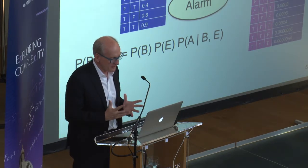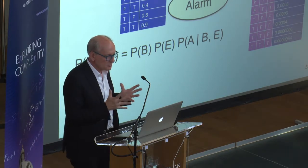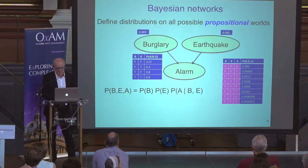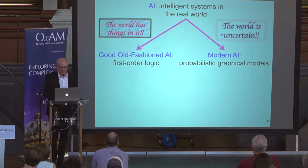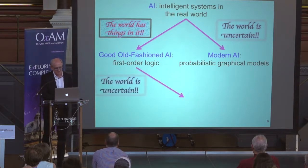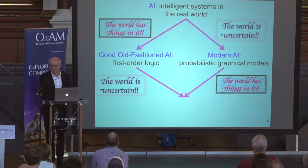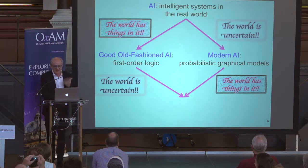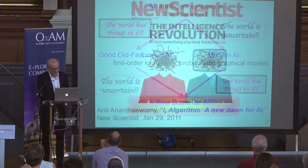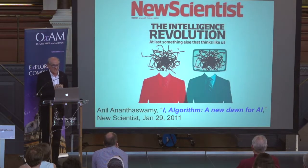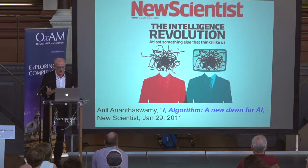So that was a huge step forward for AI, but it's still a propositional language and therefore limited in its expressive power. The people working on logic noticed that the world is uncertain, and the people working on probability noticed that the world has things in it. Of course, you put these two things together and you get a first-order probabilistic language. There was actually a cover article in the New Scientist about the development of these first-order probabilistic languages and how important that was for artificial intelligence.